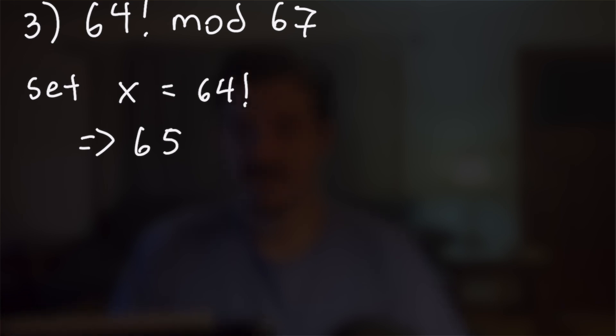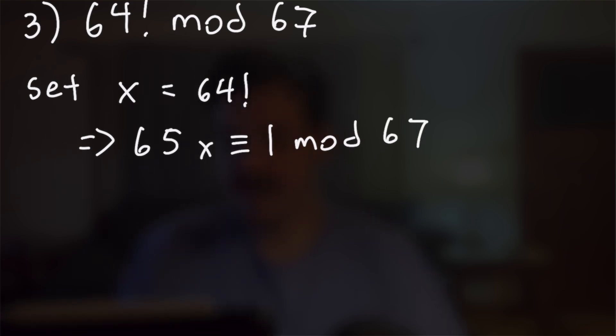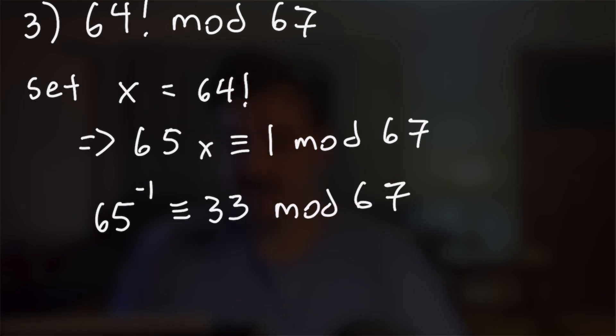We're going to multiply both sides of this congruence by 65, which will allow us to apply this corollary that I've written above. So we will have 65x is congruent to 1 mod 67. All that's left here is to find the inverse of 65, which you can do using the extended Euclidean algorithm, or you can just use a calculator to find it. And you will find that the inverse of 65 is 33. So we will have that x is congruent to 33 mod 67. And that finishes this problem off.